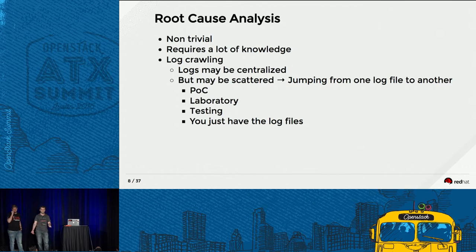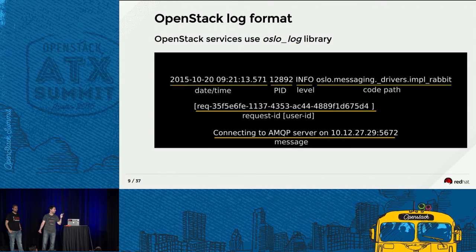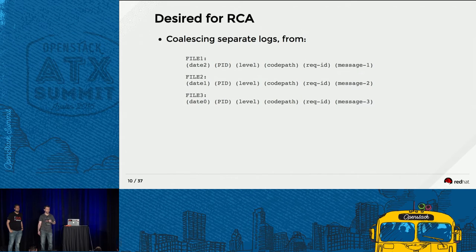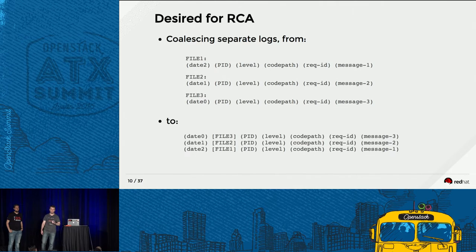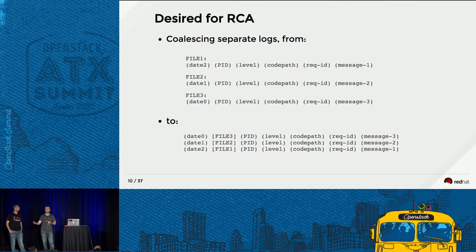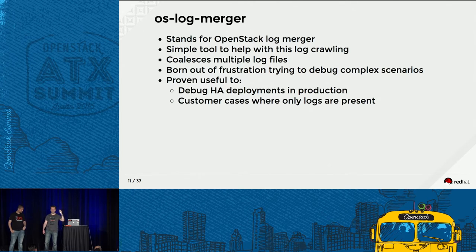Quick introduction to the OpenStack default log format — it can be changed but it's not very common. The most important part is the date and time, because what we're trying to do is go from separate log files to something with an alias that will order them correctly and let you know which file those log entries came from, so you can specifically go there and check for anything if needed. This makes it easier to follow all the requests.